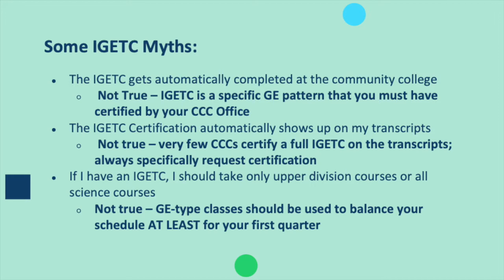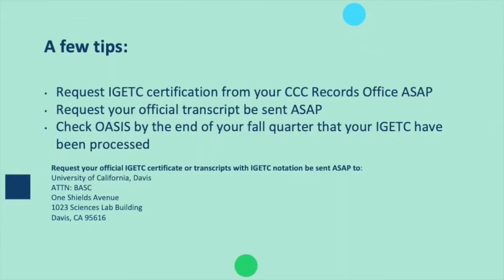The last common myth is that if you have an IGETC you should only take upper division courses or all science courses — that's not true. GE type courses should be used to balance your schedule, at least for your first quarter. A few tips we recommend: request IGETC certification from your CCC records office as soon as possible, also request your official transcripts be sent as soon as possible, and check OASIS by the end of your fall quarter to ensure that your IGETC has been processed.